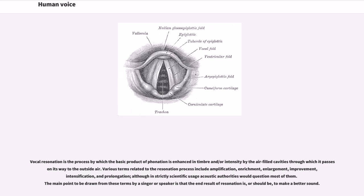Vocal resonation is the process by which the basic product of phonation is enhanced in timbre and/or intensity by the air-filled cavities through which it passes on its way to the outside air. Various terms related to the resonation process include amplification, enrichment, enlargement, improvement, intensification, and prolongation, although in strictly scientific usage acoustic authorities would question most of them. The main point to be drawn from these terms by a singer or speaker is that the end result of resonation is, or should be, to make a better sound.